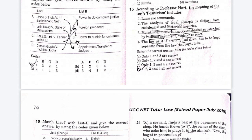Question 15: according to Professor Hart, the meaning of the term positivism includes — and the answer is that all statements are correct. Statement 1: laws are commands. Statement 2: the analysis of legal concepts is distinct from sociological and historical inquiry. Statement 3: moral judgments cannot be established via rational argument, evidence, or proof. Statement 4: the law as actually laid down has to be kept separate from the law as it ought to be.